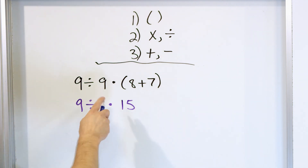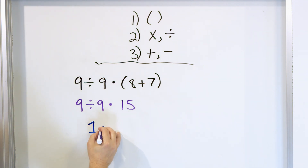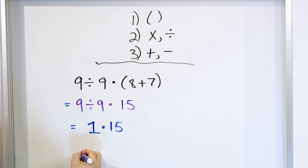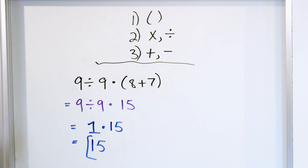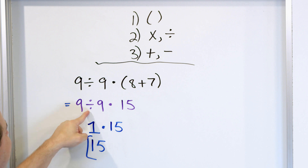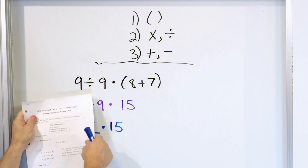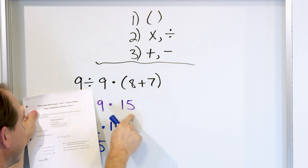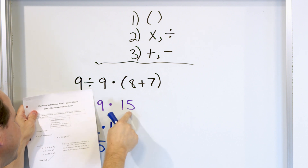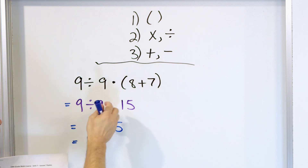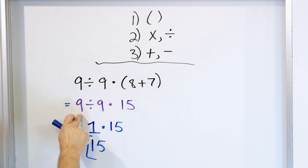So what is 9 divided by 9? That's just 1. And then we have the 15 here. What is 1 times 15? That's 15, and that's the final answer. Once we get to the point where we have division and multiplication, we do it left to right. You could make a mistake and do the multiplication first — 9 times 15 — and then divide by that, but that's going to be wrong. You have to do it left to right.